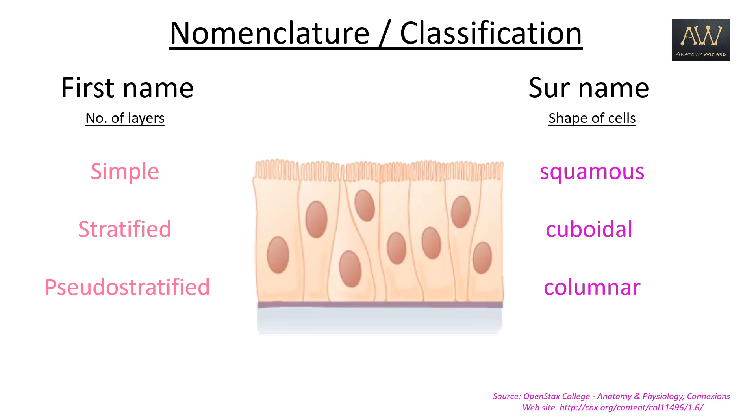Obviously, this type of epithelium can only consist of columnar cells as cuboidal cells have equal height and width.